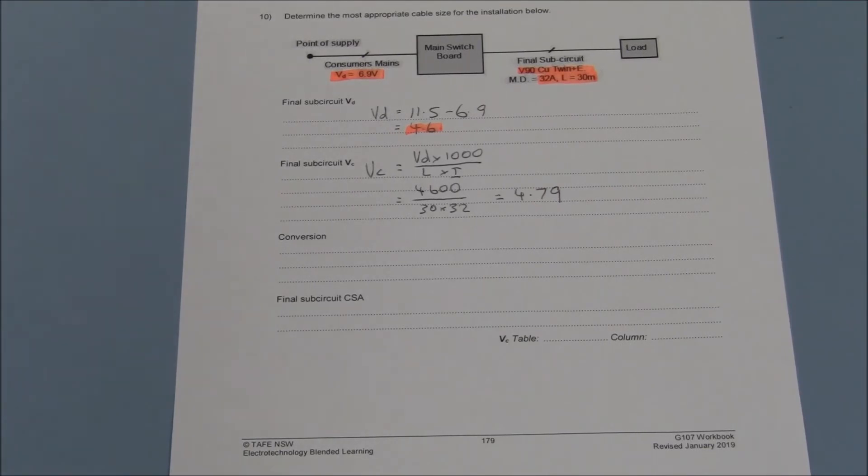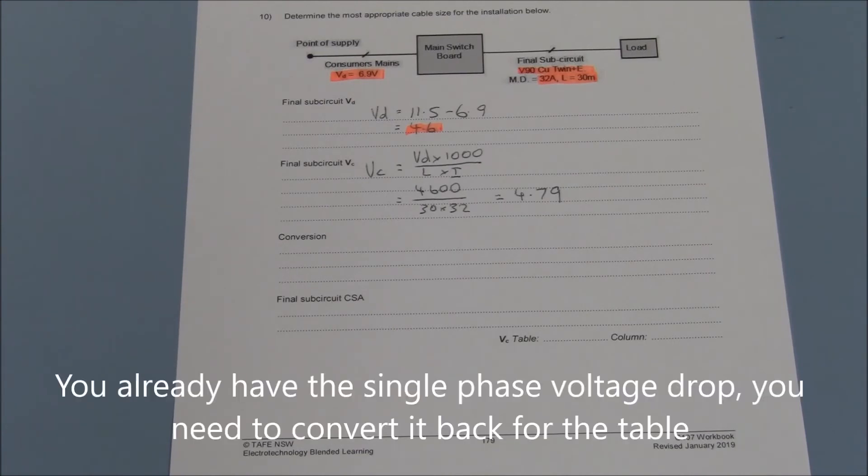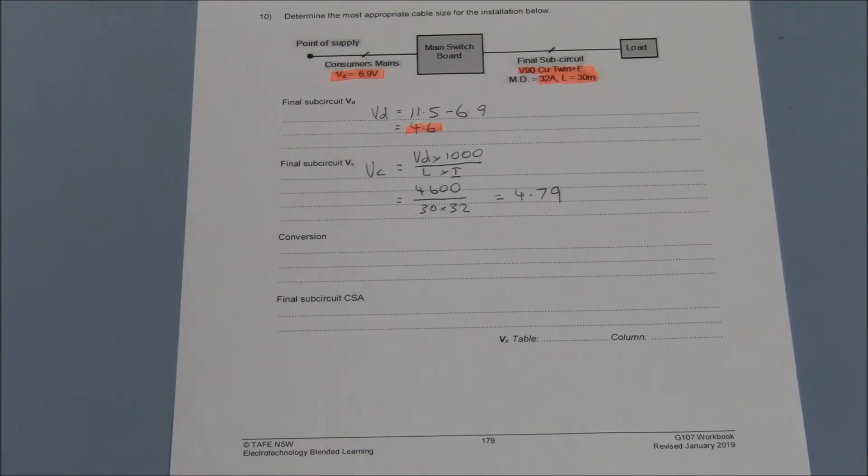Because this is a single phase arrangement, we need to convert the values for the tables. The process to convert a three phase voltage drop to single phase is to multiply it by 1.155. We already have our value of single phase voltage drop, so we need to convert it to three phase by dividing it by 1.155.